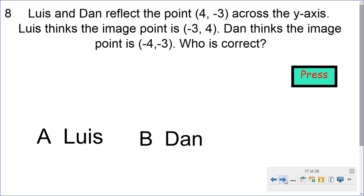So, next, we got a question. The two gentlemen are talking about point 4, negative 3. Reflect the point 4, negative 3 across the y-axis. Lewis thinks the image is negative 3, 4. Dan thinks the image of the point is negative 4, negative 3. So, who is correct? You decide. Good question.